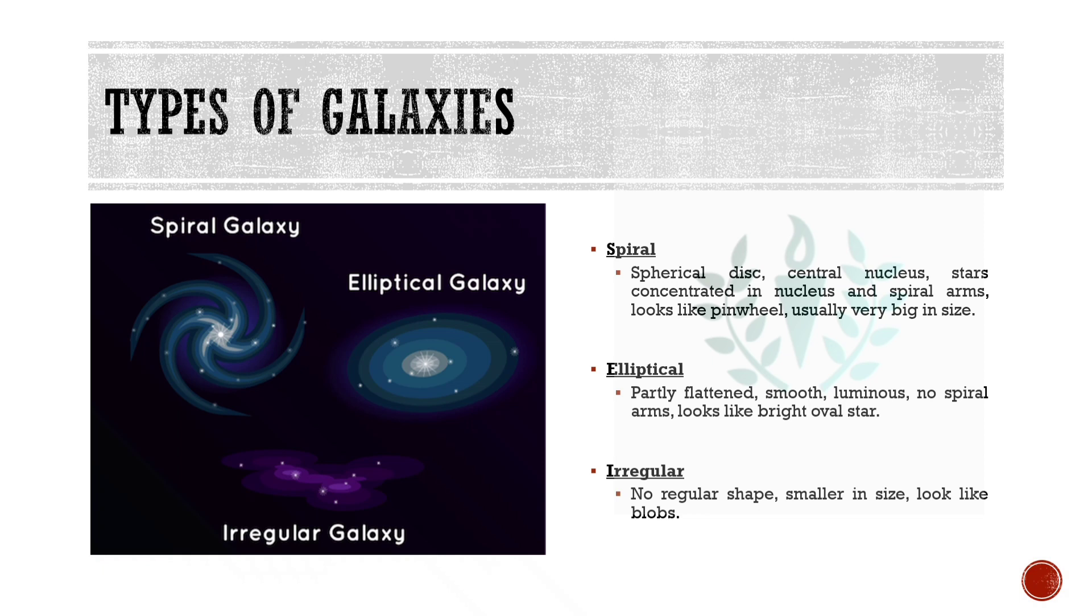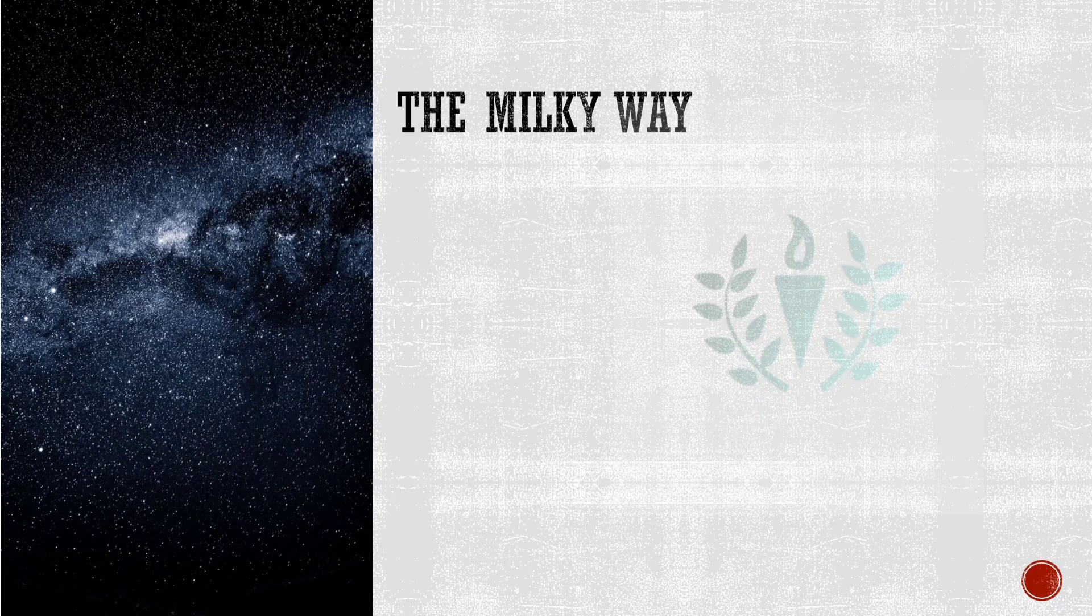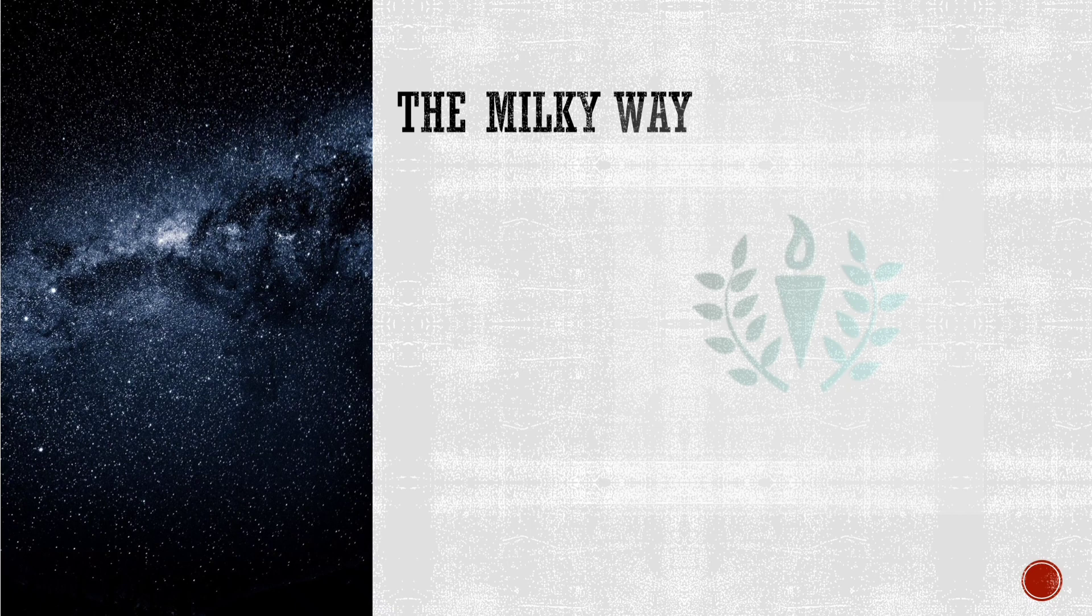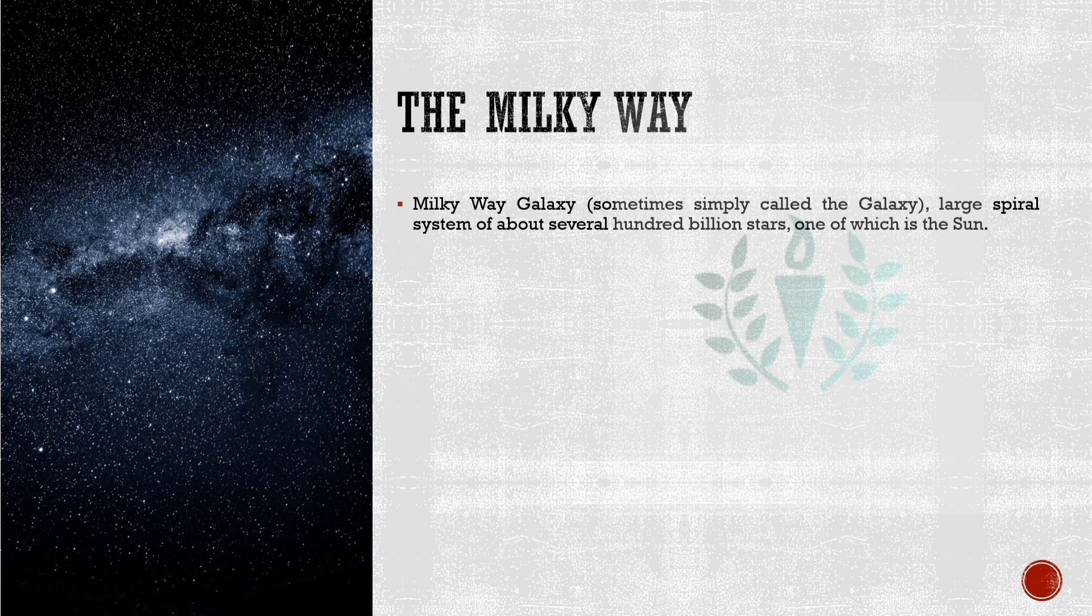So far we have discussed about the universe and the types of galaxies that are present in the universe. Now it's time for us to discuss about our home galaxy, the Milky Way Galaxy, sometimes called The Galaxy. Milky Way galaxy is a huge collection of stars, dust, and gas. It is called a spiral galaxy because if you would view it from the top or bottom, it would look like a spinning pinwheel. The Sun is a star of the Milky Way galaxy present in our solar system.